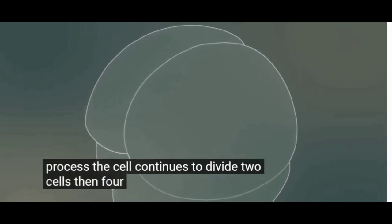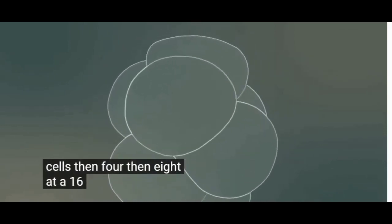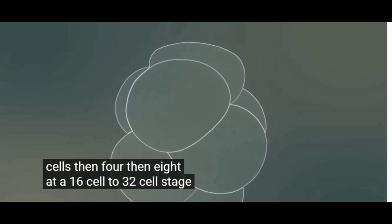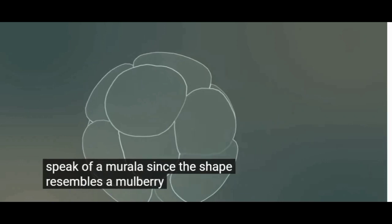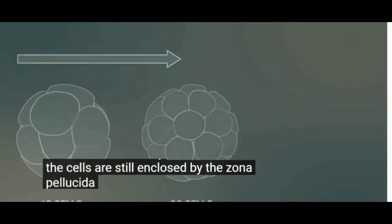Two cells, then four, then eight. At a 16-cell to 32-cell stage embryo, we speak of a morula, since the shape resembles a mulberry. The cells are still enclosed by the zona pellucida.